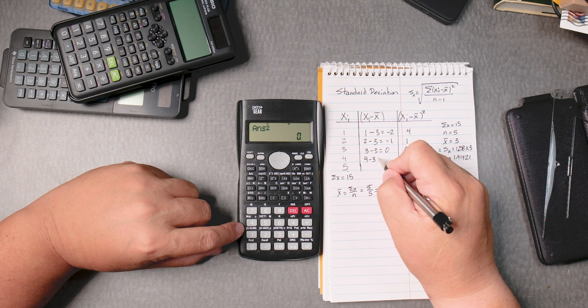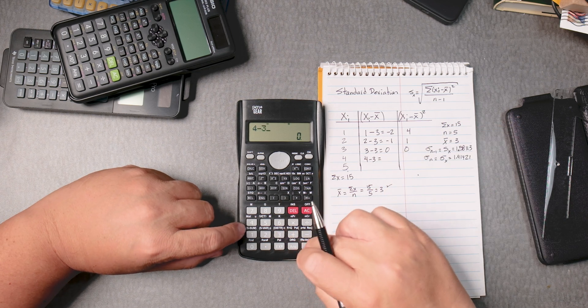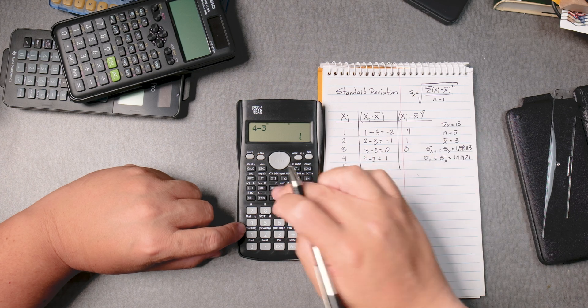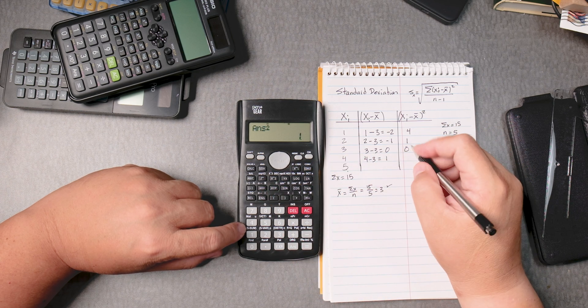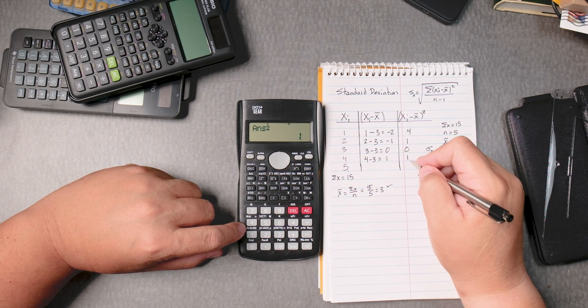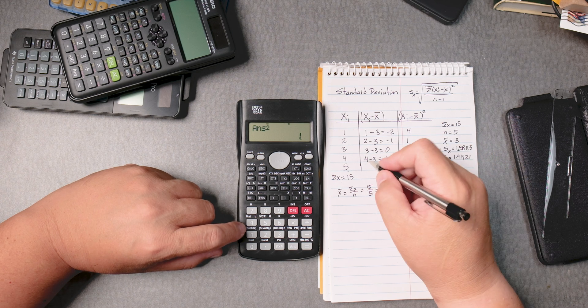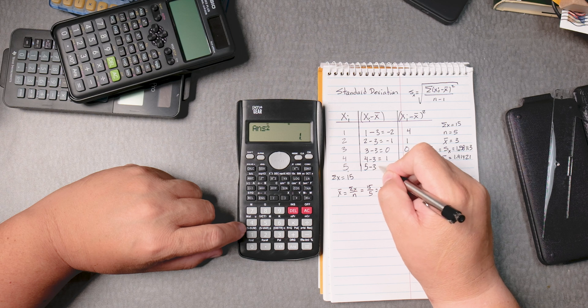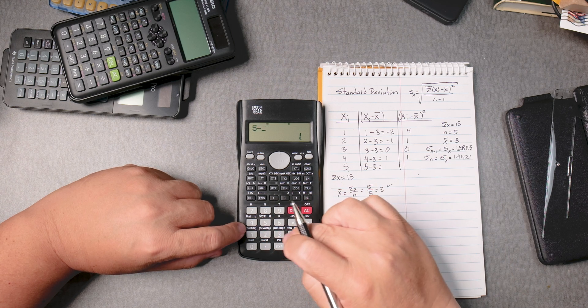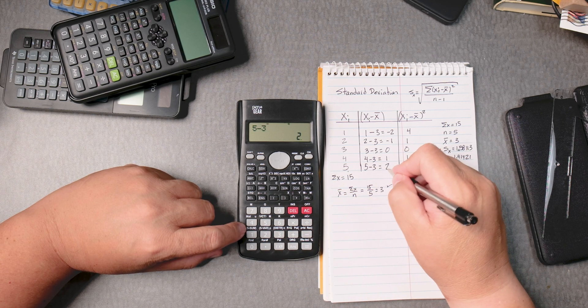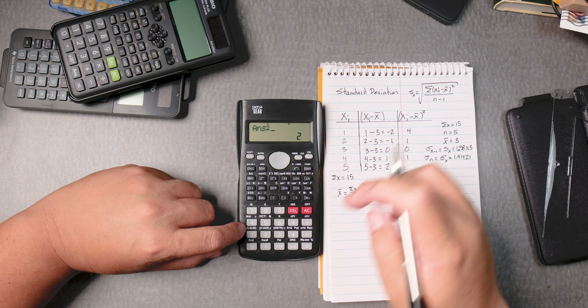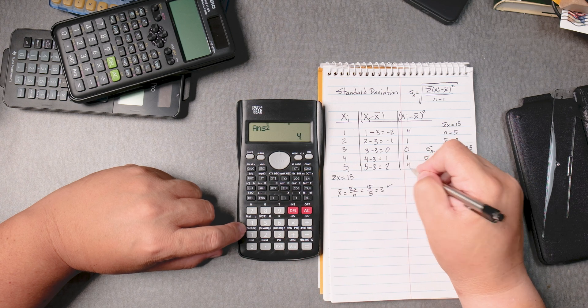And then 4 take away 3, 4 take away 3 equals 1. We square it and press equals 1. 1 times 1 is 1. If we're going a little too fast, you can always rewind. 5 take away 3 equals 5 take away 3 equals 2. And 2 squared is 4.